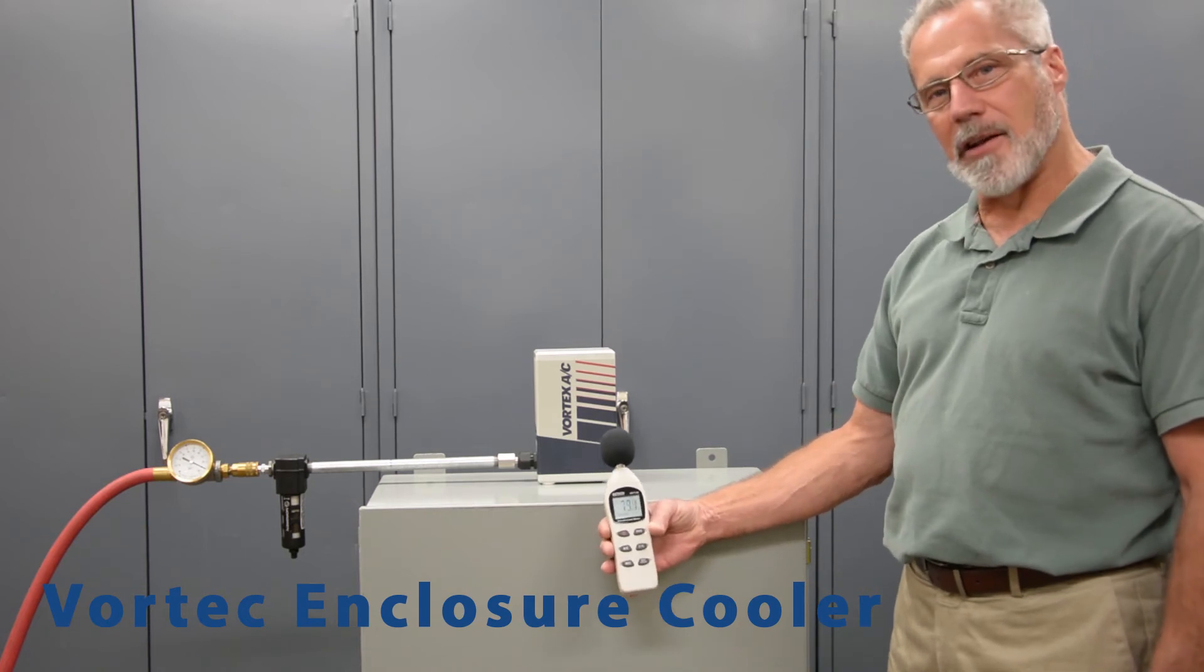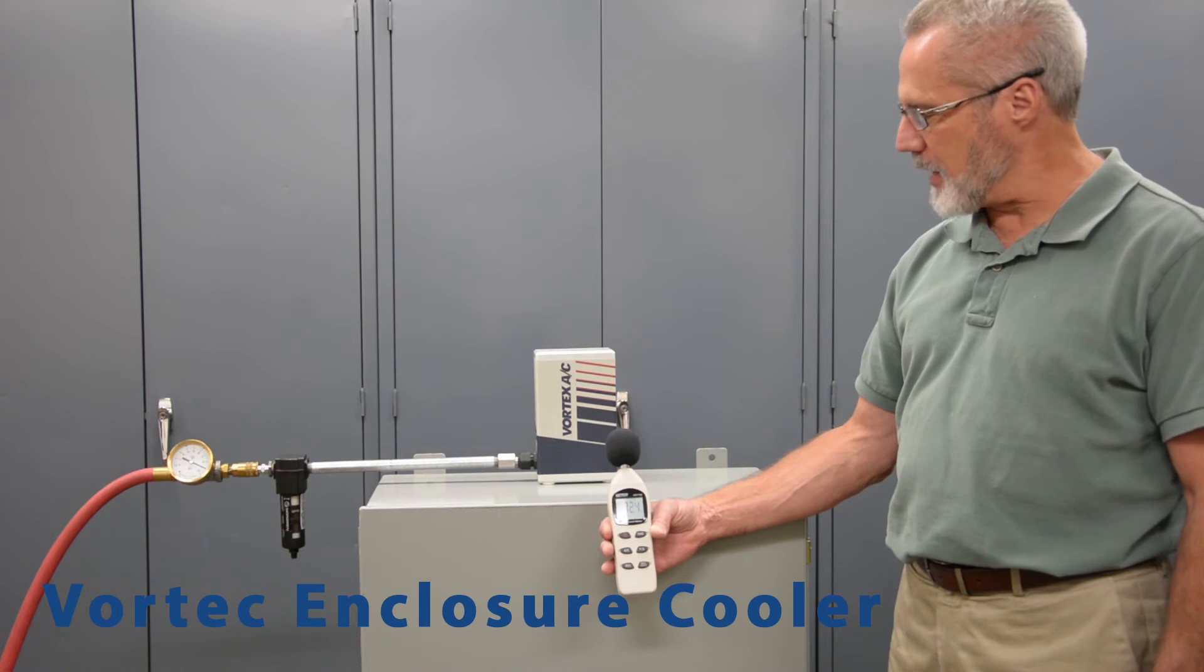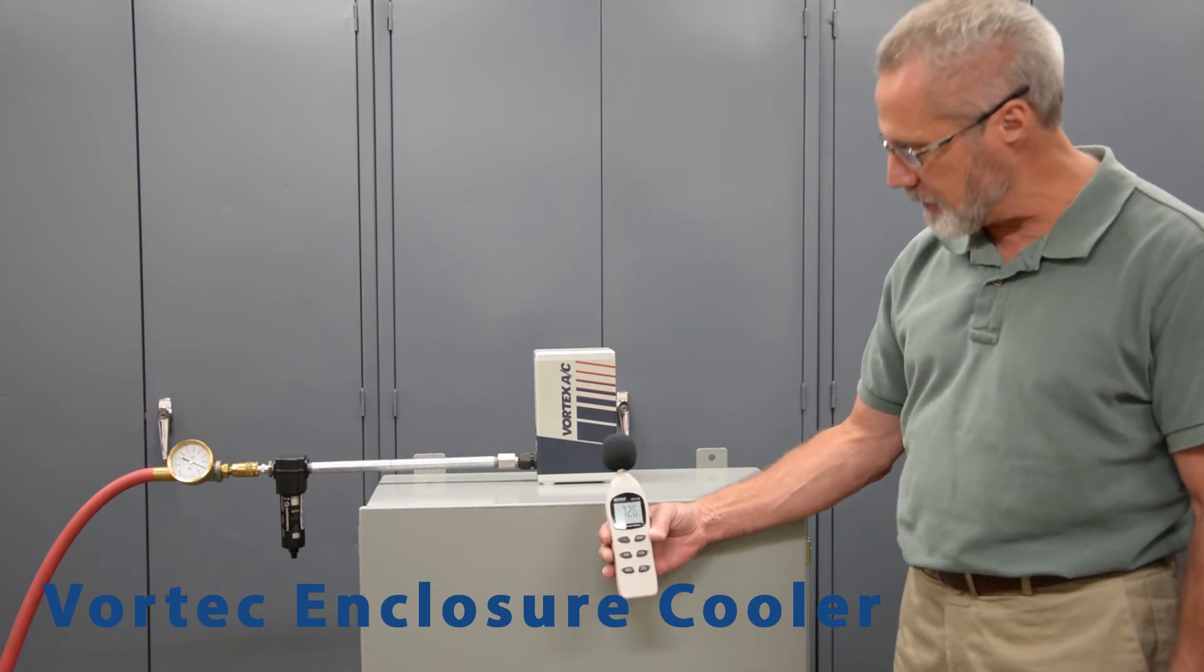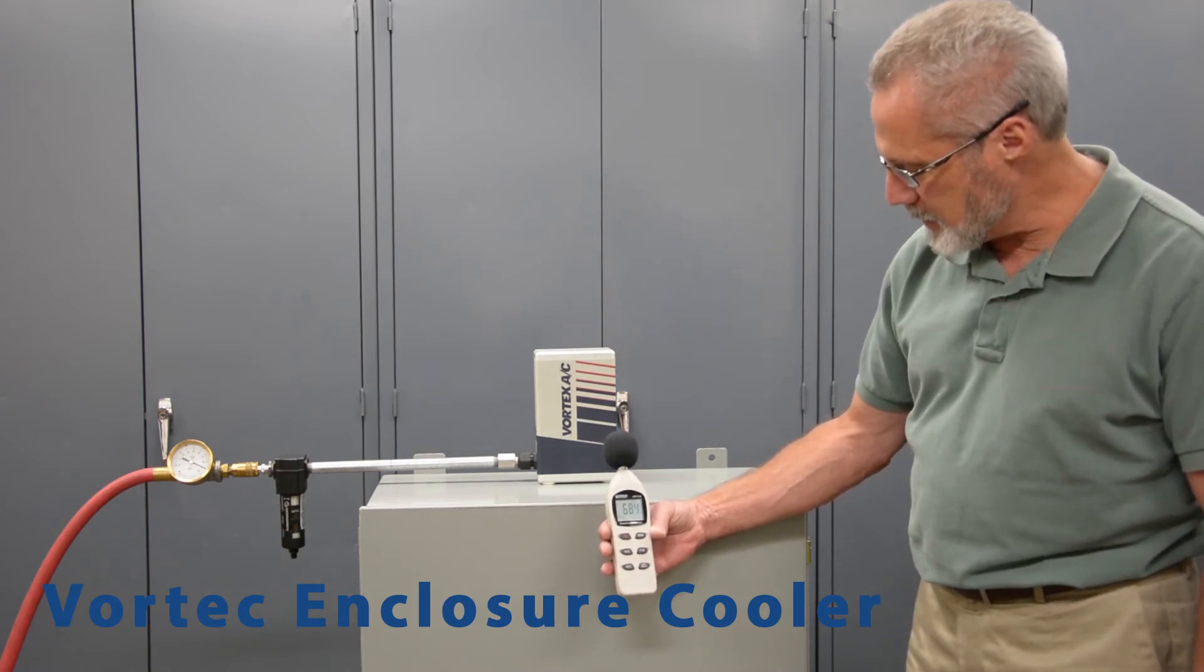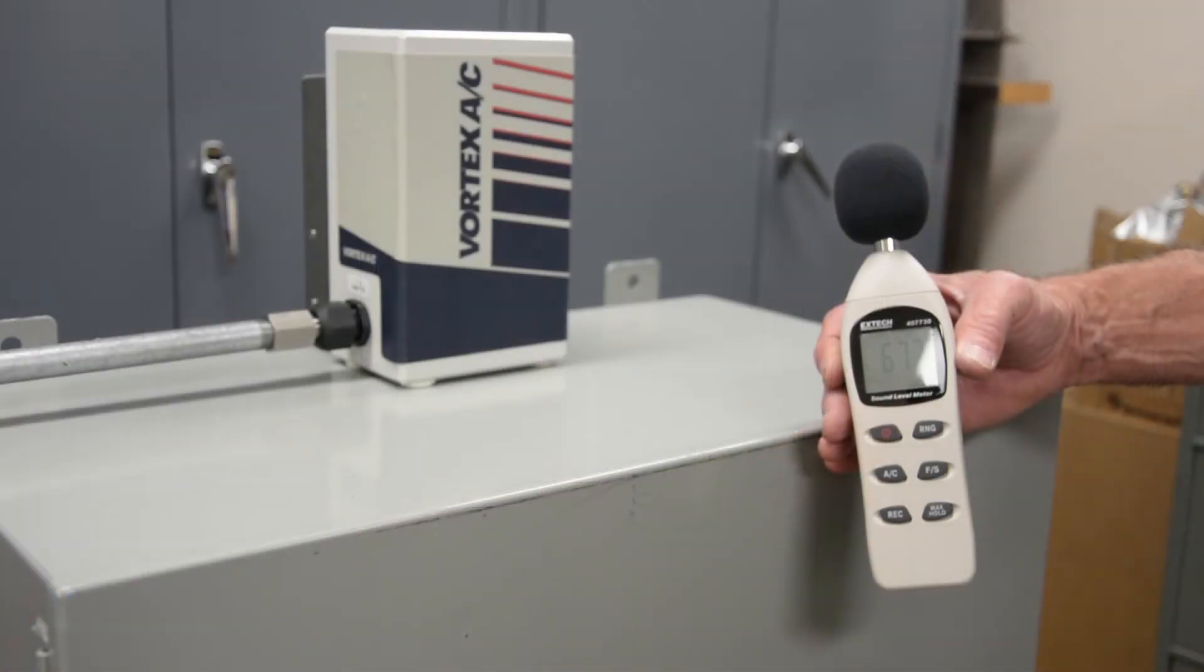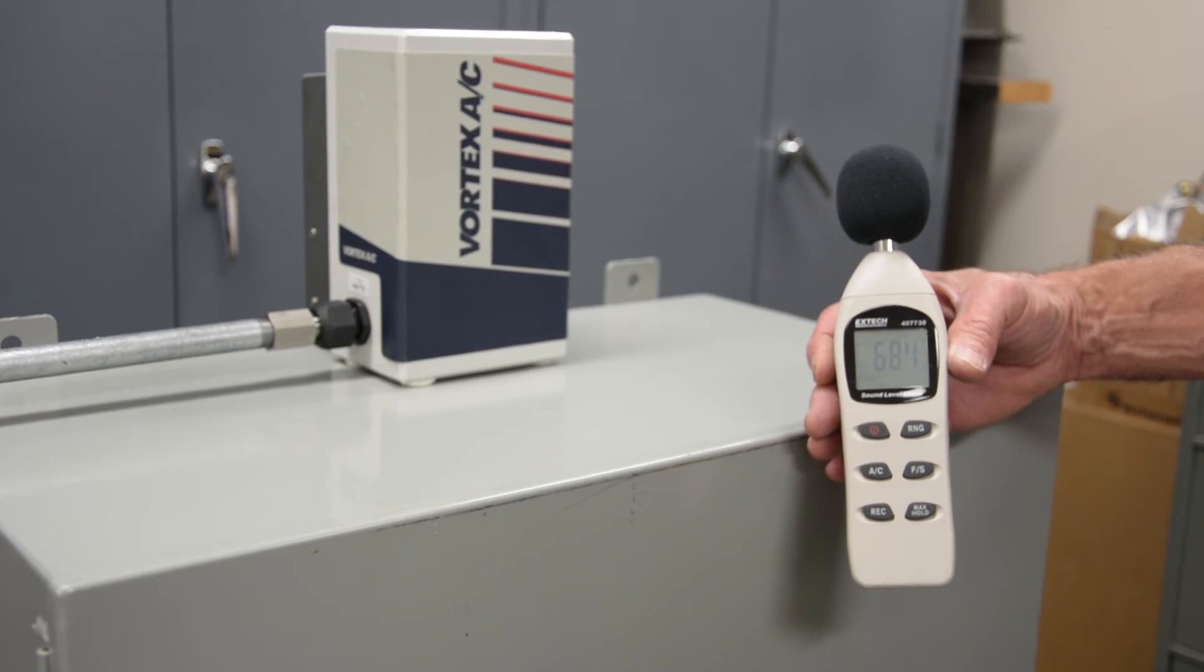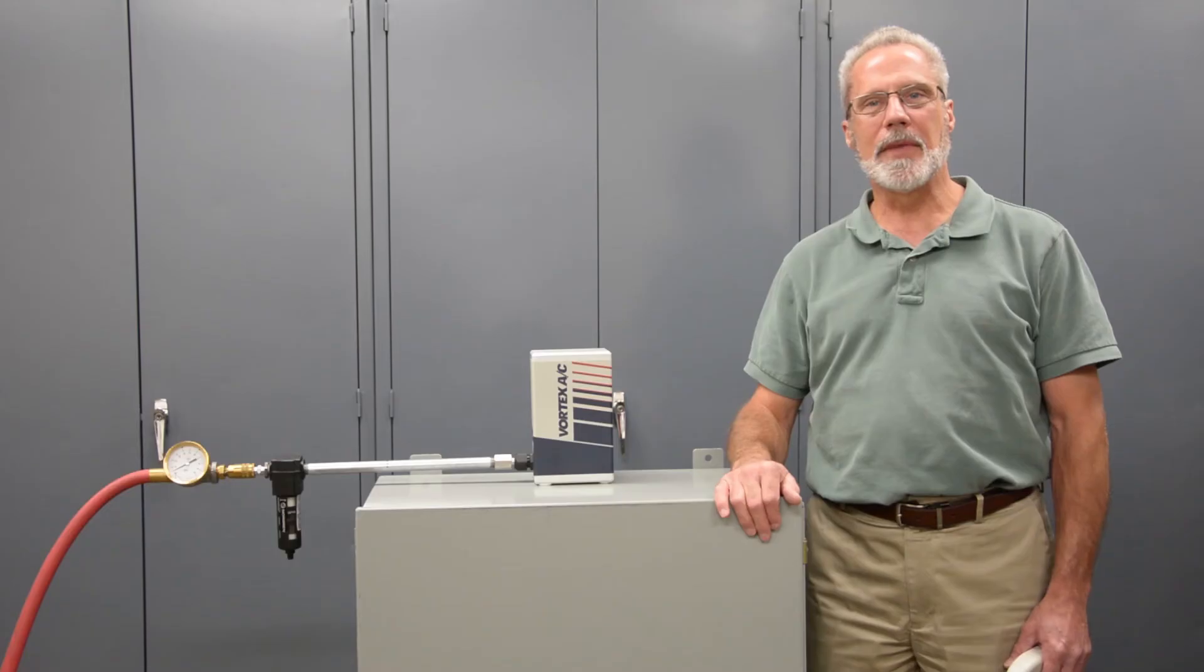I'm measuring the sound level at one foot away between the sound level meter and the Vortex AC. The sound level is fluctuating between 67 and 68 DBA again at one foot distance away from the cooler.